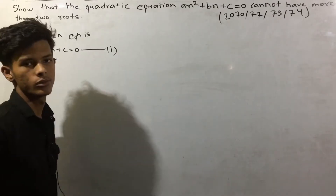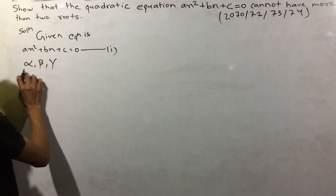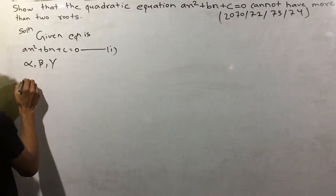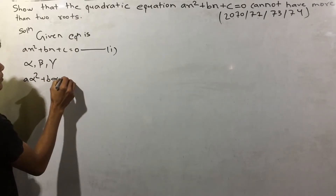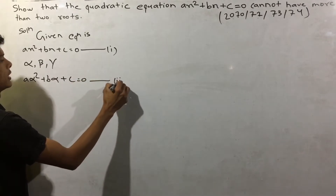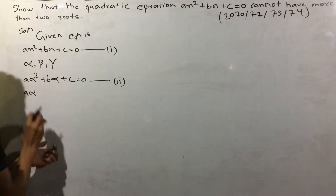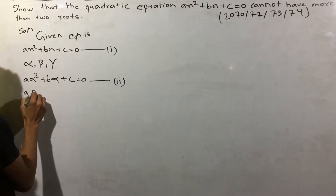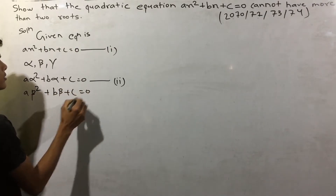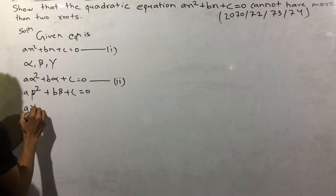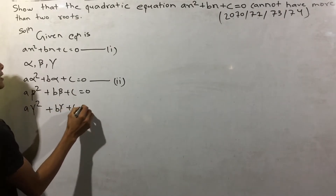Three different roots: a alpha squared plus b alpha plus c is equal to zero, and a alpha plus b gamma plus c is equal to zero.